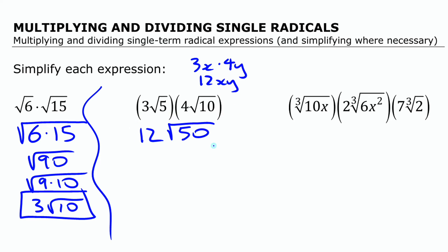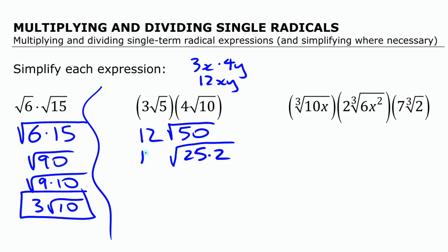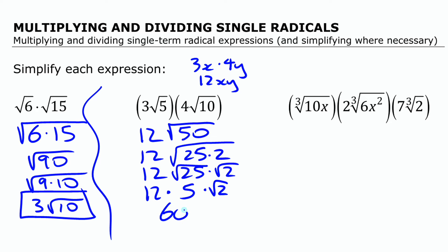But again, as with the first one, we can simplify this. Root 50 you can write as 25 times 2, so you can make that 12 times root 25 times root 2. Root 25 is 5, so we've got 12 times 5 times root 2, or in other words, 60 root 2.